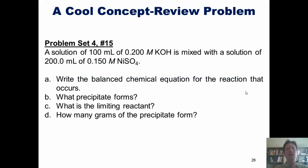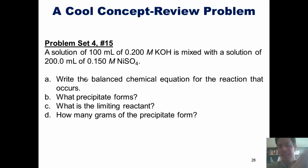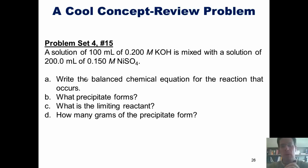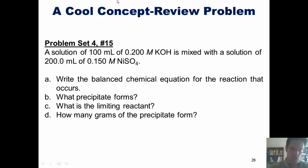I'm now going to show you one final problem that ties together elements from all of our Chapter 4 lectures. I won't do this problem for you, but will let you attempt it on your own. If you can do it well and understand exactly what you're doing and why, then you probably have solid mastery of the concepts covered in all of our Chapter 4 lectures. The problem says: a solution of 100 milliliters of 0.200 molar KOH is mixed with a solution of 200 milliliters of 0.150 molar nickel sulfate. A: write the balanced chemical equation. B: what precipitate forms? C: what is the limiting reactant? D: how many grams of the precipitate form?